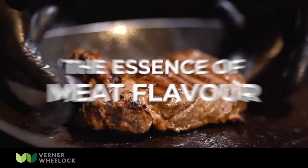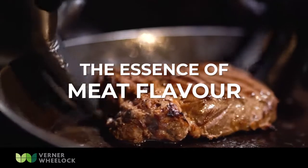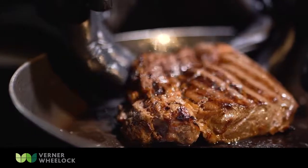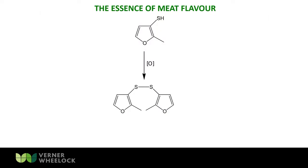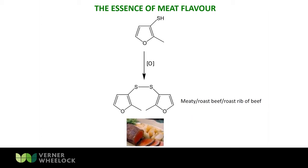I want to take a small element from the course — I've called it 'The Essence of Meat Flavor.' On screen you can see the compound bis(2-methyl-3-furyl) disulfide. This is a very potent flavor chemical — it's meaty, it's roast beef, it's roast rib of beef in character, and this is what's created in meat when you roast a piece of beef in the oven. The threshold is 0.0002 parts per billion.